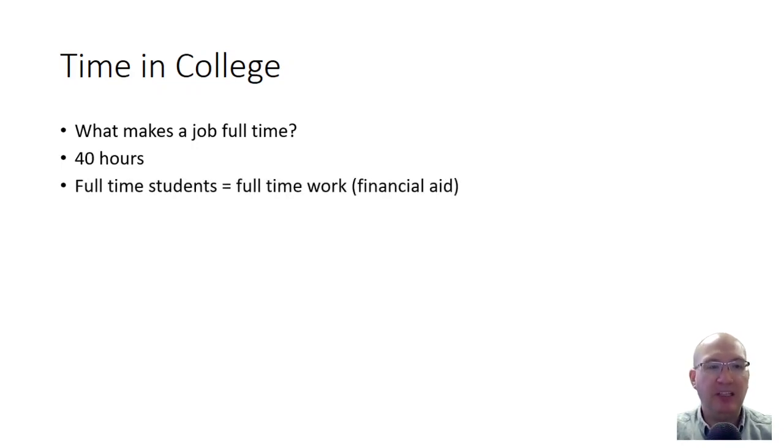Since we're on the subject of money, one thing I want to point out is this issue of time in college. It's very different from a brick and mortar high school where you'd go at 7:30 AM and leave at 3 PM. That's not how college works. You're only in class for so many hours a week. So what makes a full-time job? 40 hours a week. If you're a full-time student, that means you should be spending about 40 hours a week with schoolwork. Financial aid wants you to be a full-time student. You need at least 12 hours to qualify.